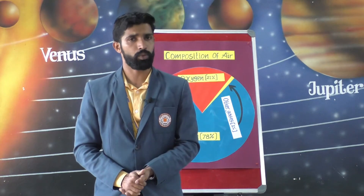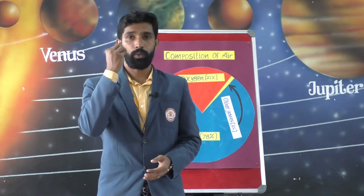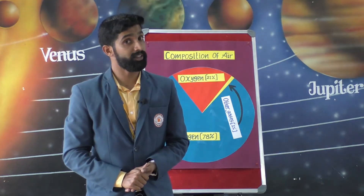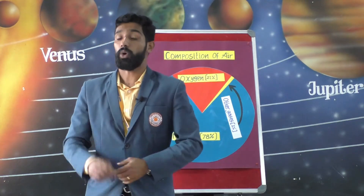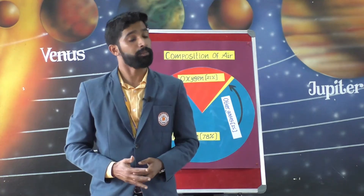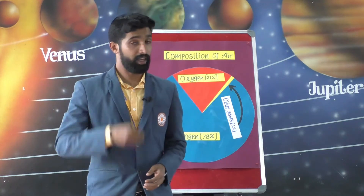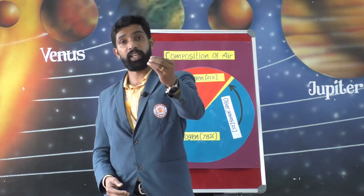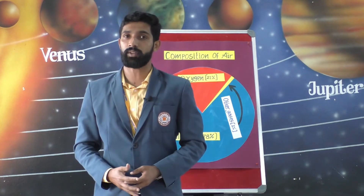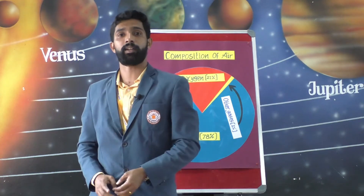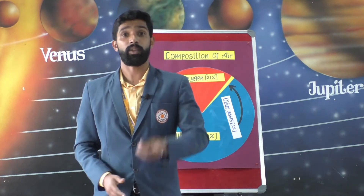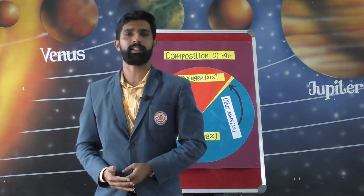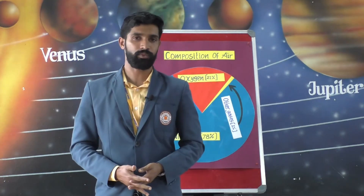The components of the atmosphere are useful to us in various ways. Nitrogen is required to maintain the fertility of the soil. Oxygen is the gas that living beings breathe in. Carbon dioxide helps plants to produce food in the presence of sunlight through photosynthesis, and it also keeps the earth warm by absorbing the heat radiated from the surface. Ozone protects us from the harmful ultraviolet rays of the sun. Water vapor in the atmosphere causes precipitation, and dust particles form the nucleus for condensation, resulting in the formation of clouds.